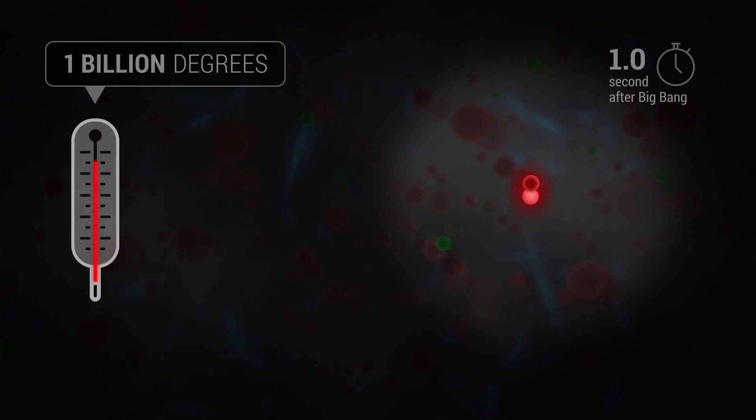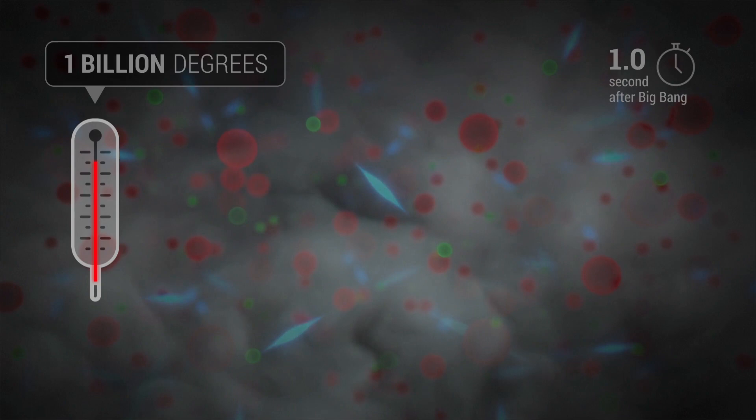Meanwhile, the photons couldn't go very far without crashing into electrons and newly formed nuclei. The photons bounced around like sunlight does in a dense fog. Because all the light was scattered around, the entire universe was foggy.